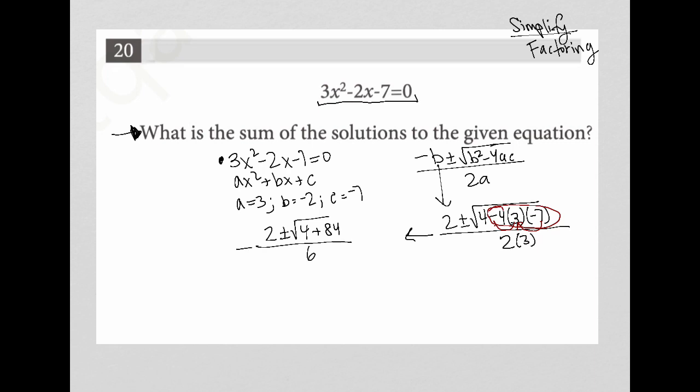So to simplify further, I would have 2 plus minus the square root of 88, all over 6. I'm going to simplify my radical by pulling out a perfect square and turning my root 88 into the square root of 4 times the square root of 22, knowing that the square root of 4 is 2. So the square root of 88 really can be simplified to 2 root 22.